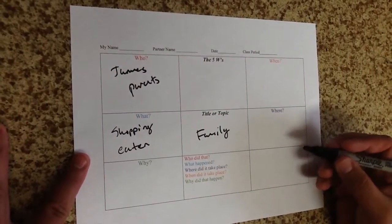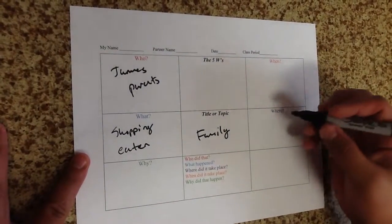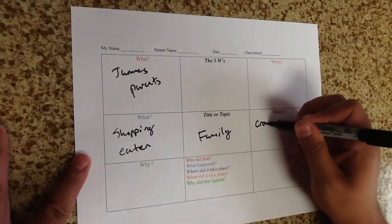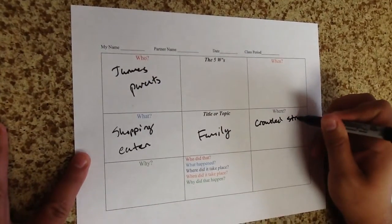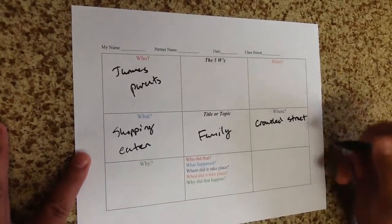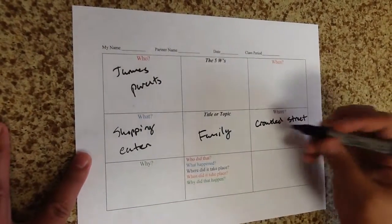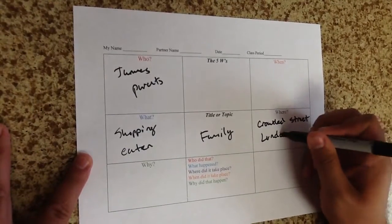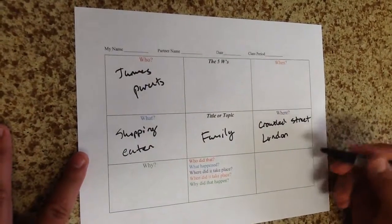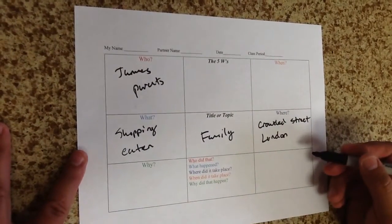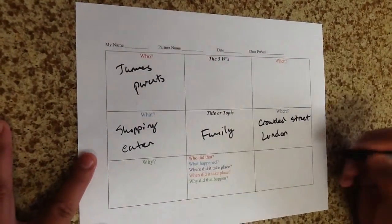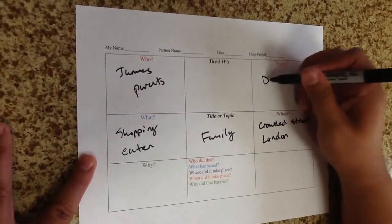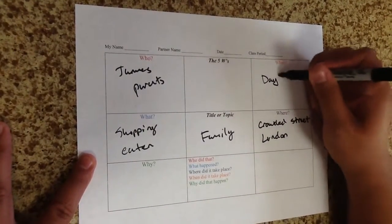Where did this take place? Well, we know that it took place on a crowded street. So let's write down crowded street. And we also know it was in the city of London, so let's write down London. When did this happen? I know that it happened during daytime, so let's write down daytime.